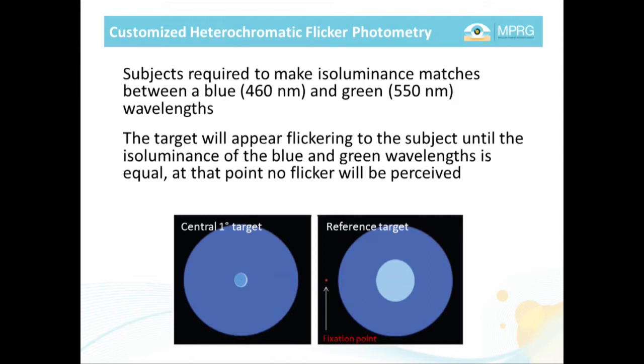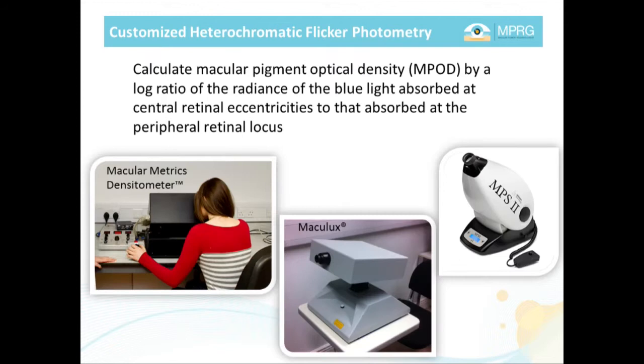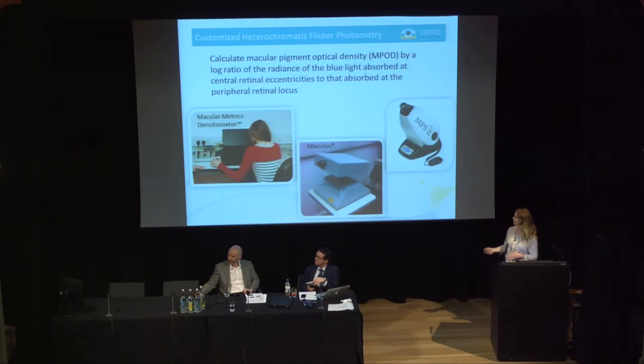The first technique I'll discuss is customized heterochromatic flicker photometry. We use a research model called the Macular Metrics Densitometer, but there are lots of clinical devices on the market, including a few downstairs in the exhibit hall. Subjects are required to make isoluminance matches between a blue and a green wavelength. With our device, the target appears flickering until that isoluminance match has been made, then it appears still. We take that radiance measurement of the blue and calculate the log ratio of blue light absorbed at the macula to a peripheral reference point. There's our research device, a more clinical faster version, and the MPS.